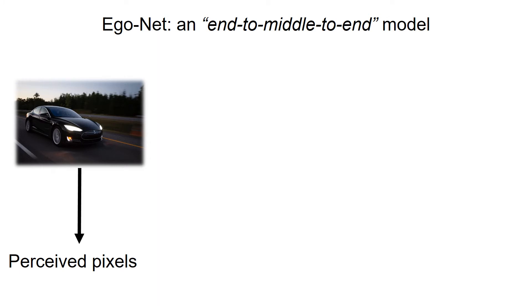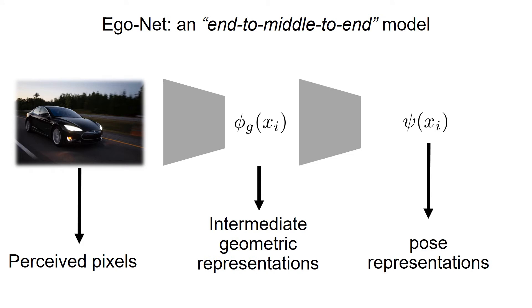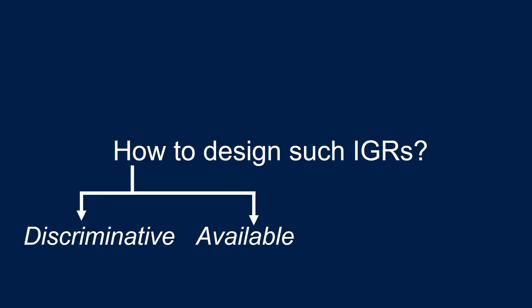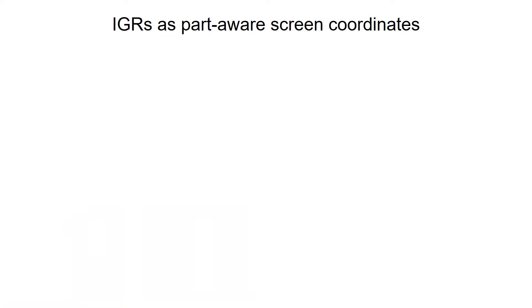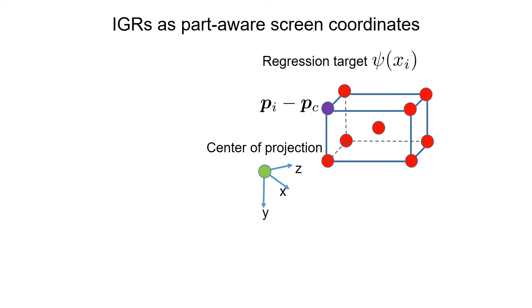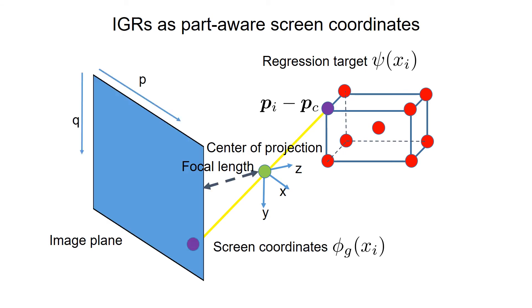Instead of directly regressing pose vectors from pixels, we explicitly define and encourage the model to learn some intermediate geometric representations (IGRs). We hope the IGRs can be informative for pose estimation, easy to compute from primitive annotations, and easy to understand. Towards these goals, we use the oriented cuboid to represent each labeled instance. We sample a set of 3D points on the cuboid and define the regression target as their camera coordinates relative to the cuboid's center. We then project the 3D points back to the image and define the IGRs as the projected screen coordinates.